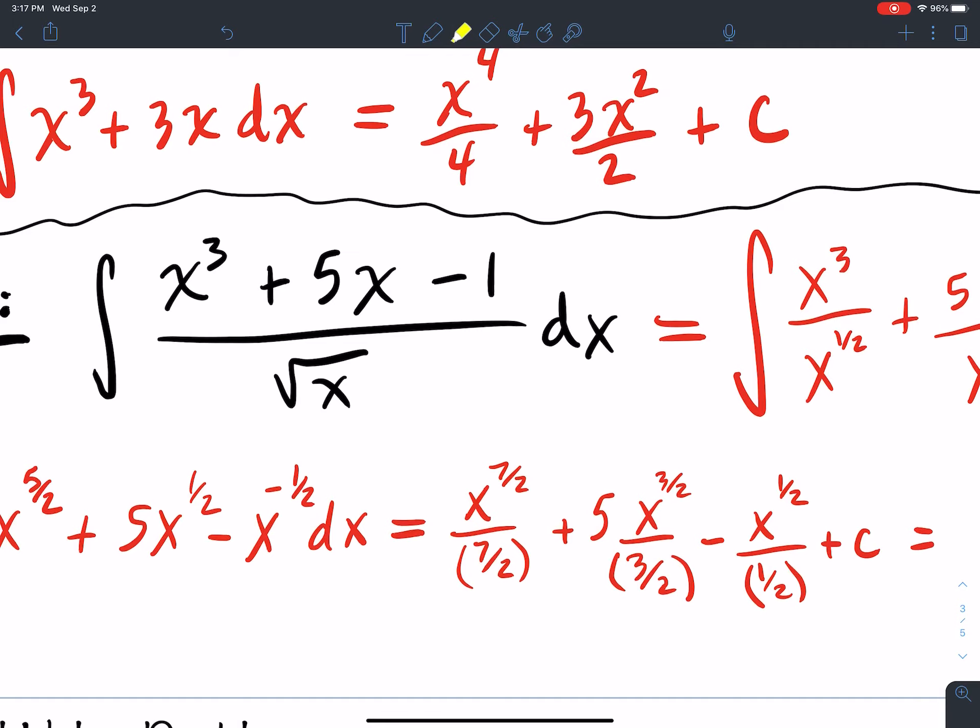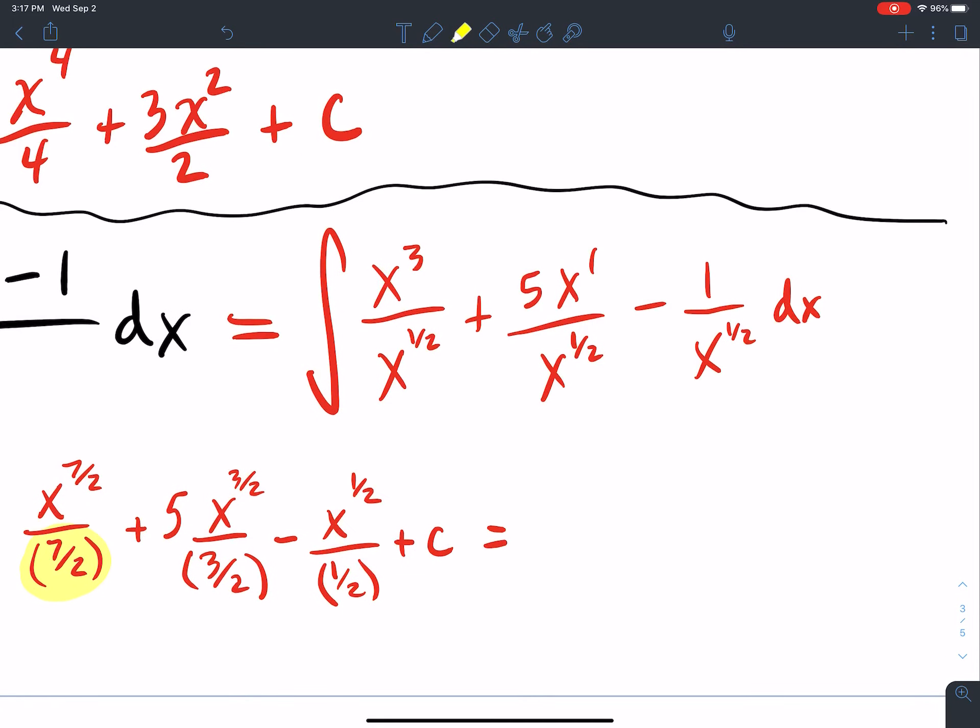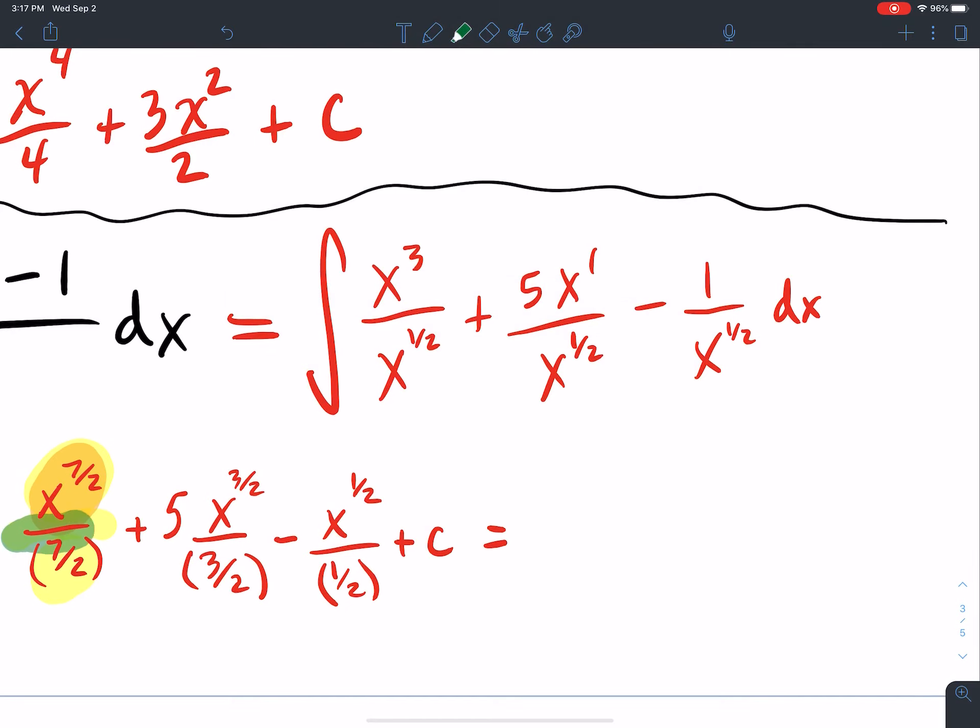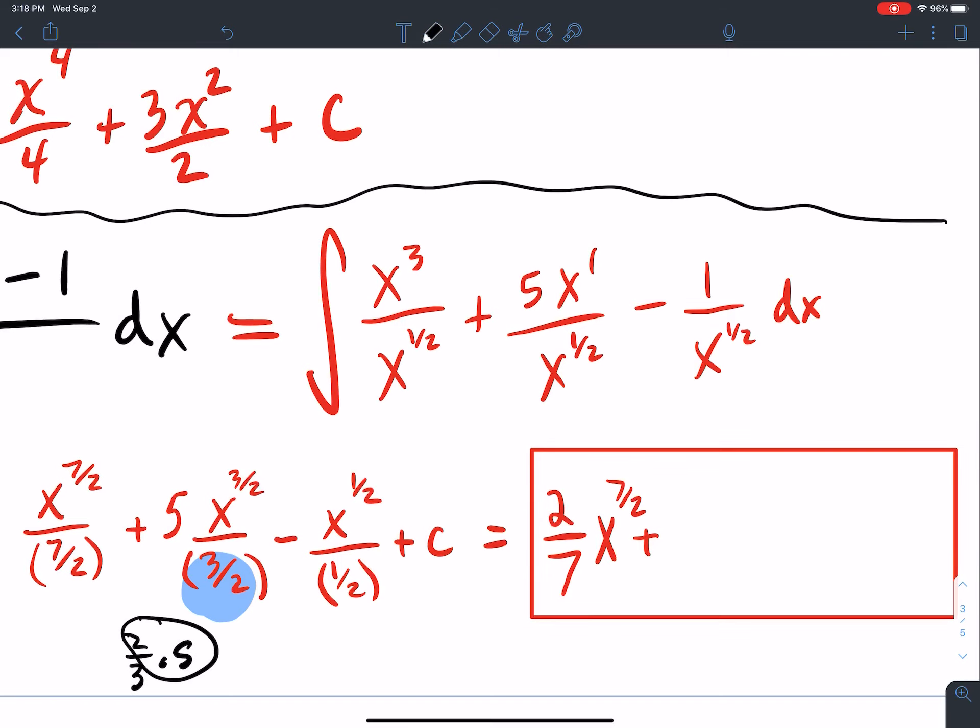Simplifying this, dividing a fraction, easy as pi. All you got to do is flip and multiply. So I do keep, change, flip. How does keep, change, flip work? I keep the numerator the same. I change from division to multiplication. And then I flip the denominator. So I flip it. So I do two sevenths, two sevenths multiplied by this right here. And then same thing for this part here. The five stays the same. I flip this. So I have two over three times five. So two times five. And then three times one. So that's 10 over three. And so that gets me x to the three halves, 10 over three for my coefficient in front there. And then the negative one half turns into negative two. And then I plus C it.